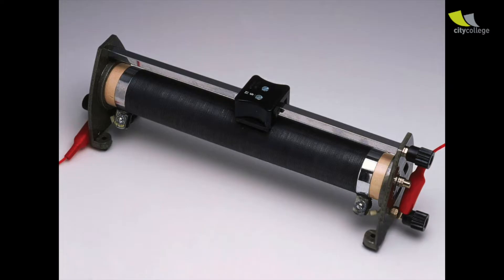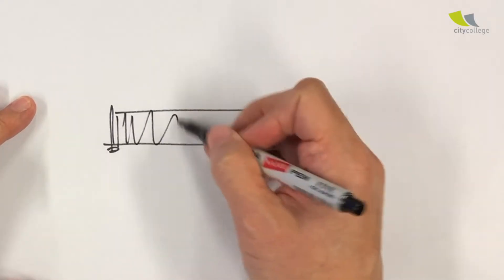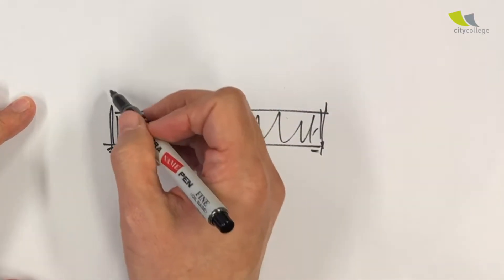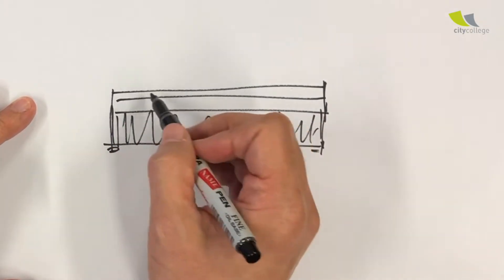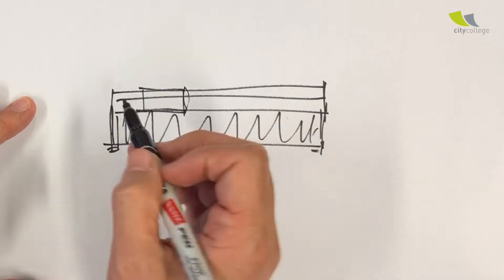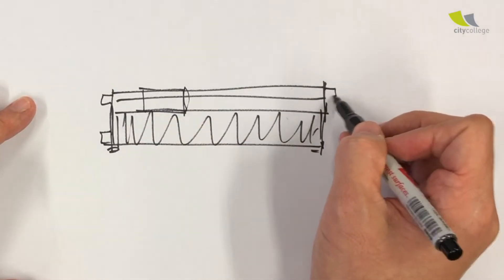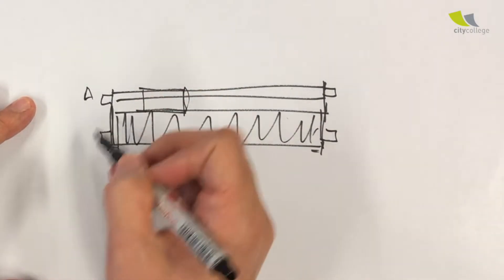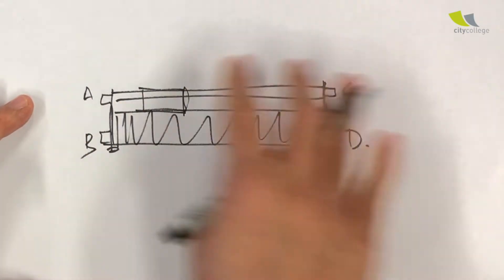There's another type of variable resistor that looks like this. I will draw it for you. So basically it is a coil of wire over here. And then there is a rod on the top. And on the rod, there is a slider. So this type of variable resistor, there are four knobs. Let's call them A, B, C, D.